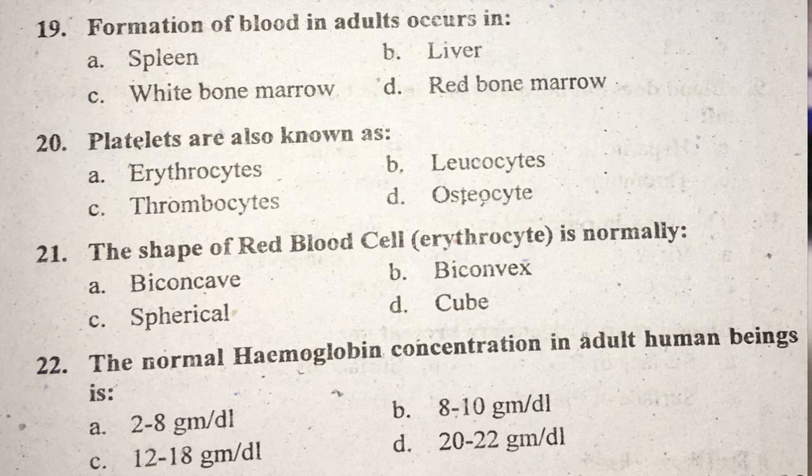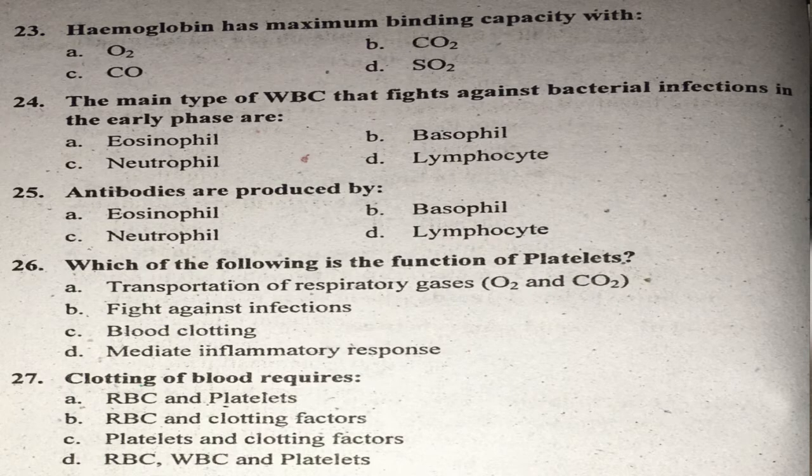Question number twenty-two: The normal hemoglobin concentration of an adult human being is what? The normal hemoglobin concentration in an adult is 14 to 18 grams per deciliter. Right answer is C.